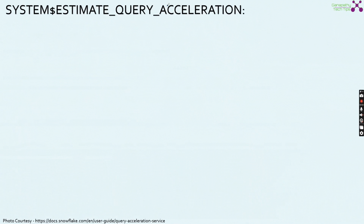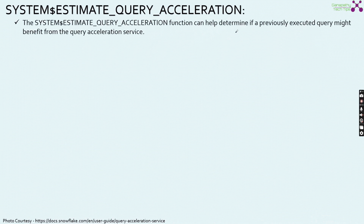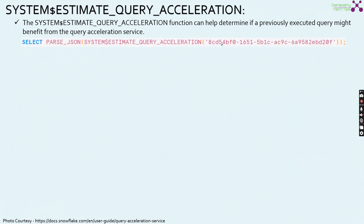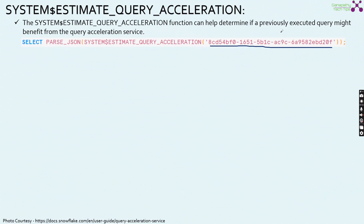Two views help identify eligible queries. The first is the SYSTEM$ESTIMATE_QUERY_ACCELERATION function, which helps determine if a previously executed query might benefit from the query acceleration service. You can write a simple SELECT with the function followed by the query ID — which you can obtain from the query history view in the Snowflake UI or from the SNOWFLAKE.ACCOUNT_USAGE.QUERY_HISTORY view.